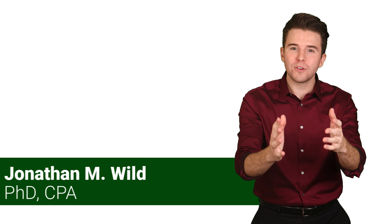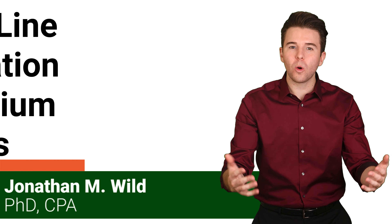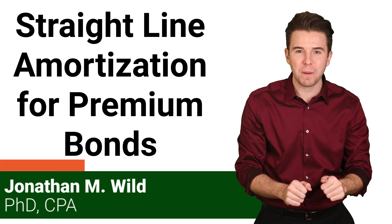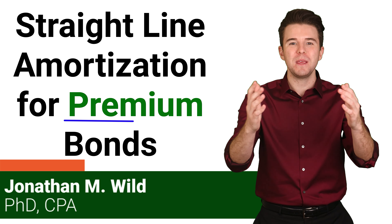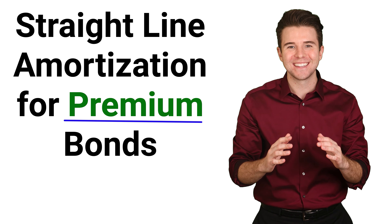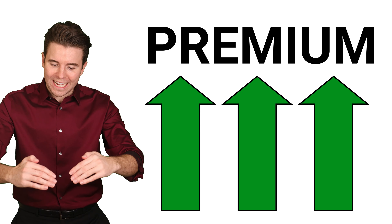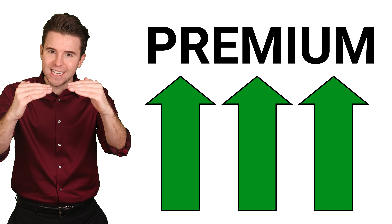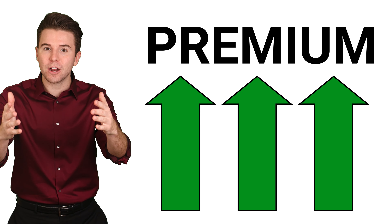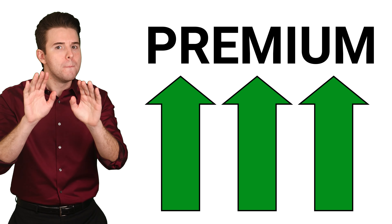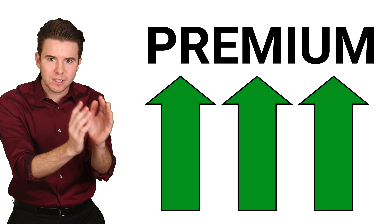Hi, I'm Jonathan Wild, and we are going to cover how to record straight-line amortization and interest payments for premium bonds. A bond is issued at a premium when the contract rate is higher than the market rate. This premium must be amortized over the life of the bond.